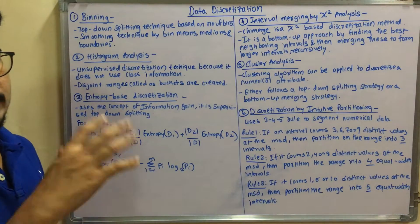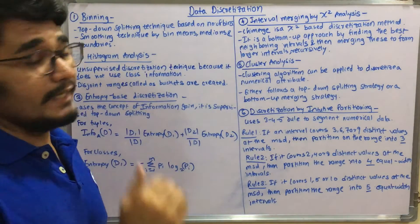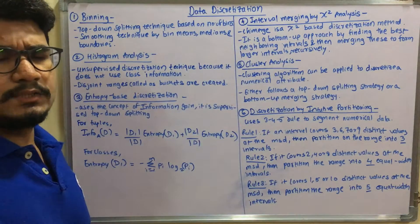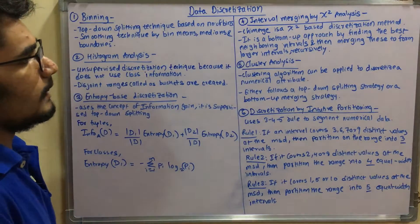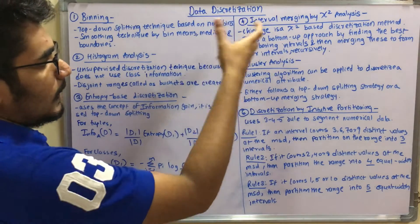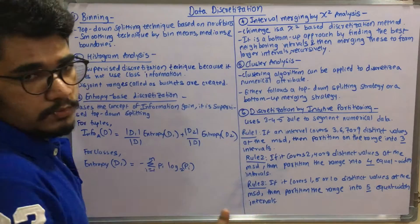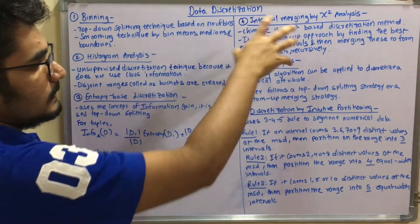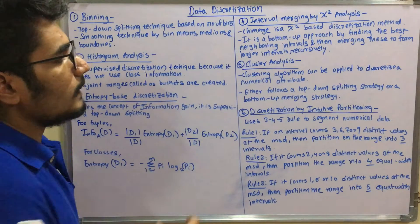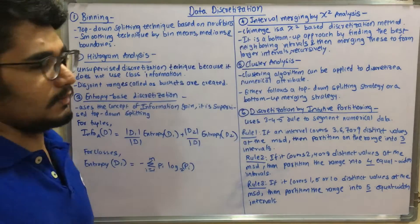Next you have the fourth type of data discretization technique, interval merging by chi-square analysis. I have already discussed the chi-square technique in this video for data mining. Chi-square analysis technique is called chi-merge. Chi-merge is basically chi-square best discretization method. It is a bottom-up approach, so all these were top-down approaches. This is a bottom-up approach by finding the best neighboring intervals. It has its expected value, observed value, and then it merges these two to form the longest integer or intervals recursively.